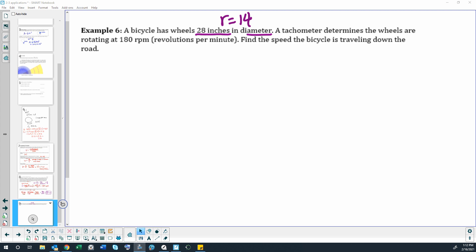All right, section 2.3 example 6. A bicycle has wheels 28 inches in diameter. A tachometer determines the wheels are rotating at 180 revolutions per minute. Find the speed the bicycle is traveling down the road.